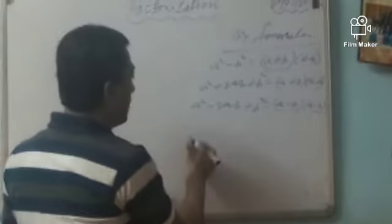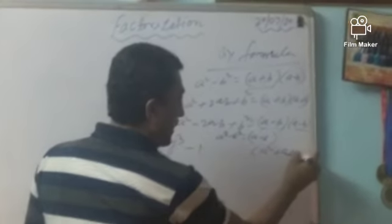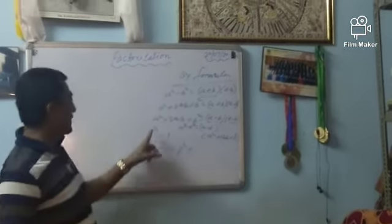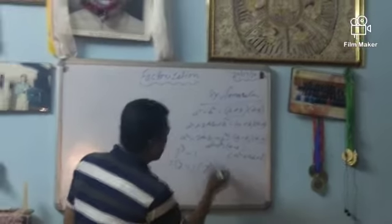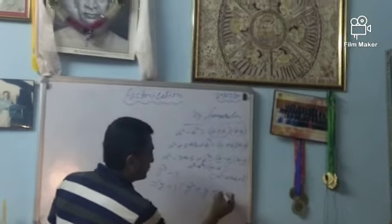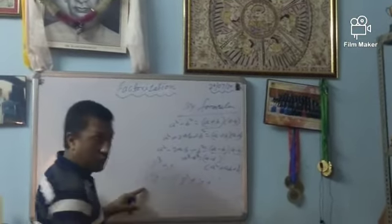Sometimes the expression comes in the form of a³ - b³. For example, y³ - 1 is in the form a³ - b³. The formula is: a³ - b³ = (a - b)(a² + ab + b²). Applying this: y³ - 1 = (y - 1)(y² + y·1 + 1²) = (y - 1)(y² + y + 1). This is the factorization of y³ - 1.